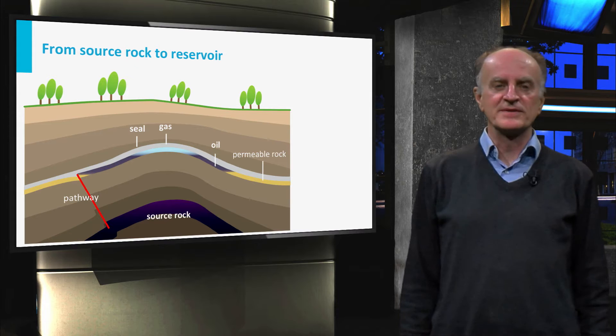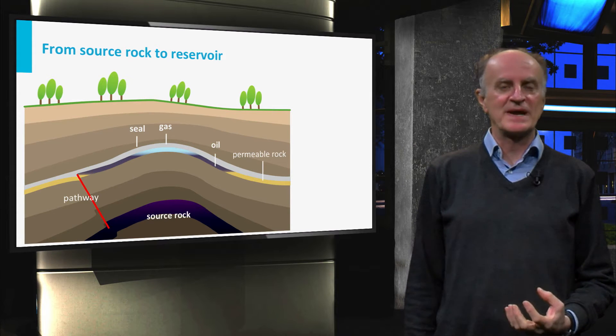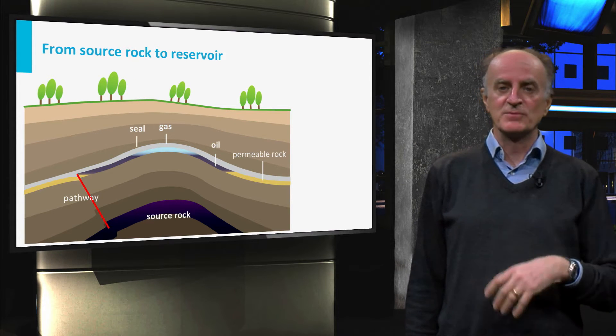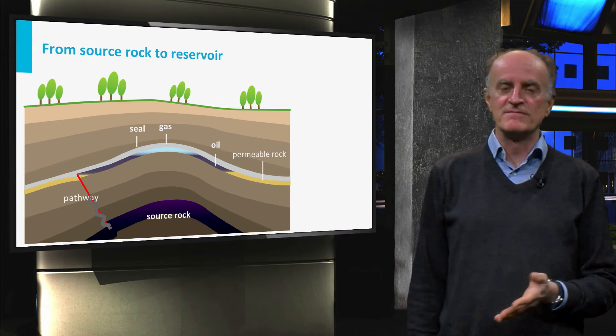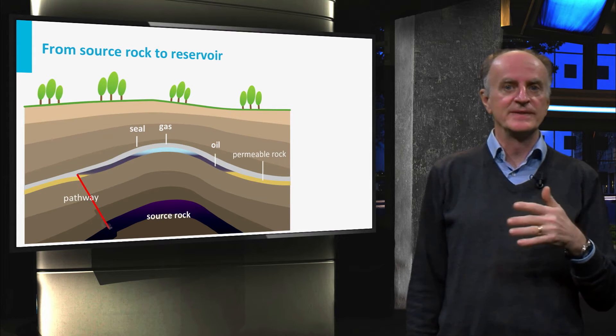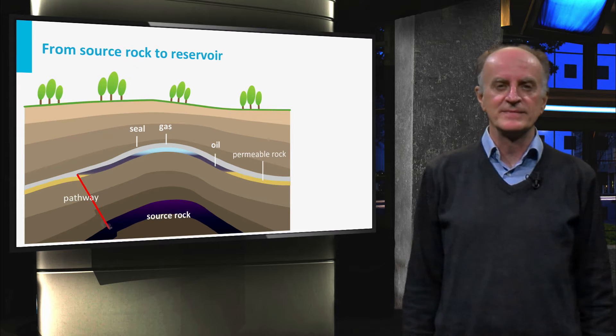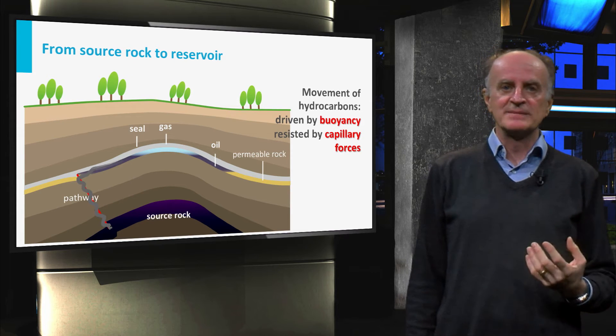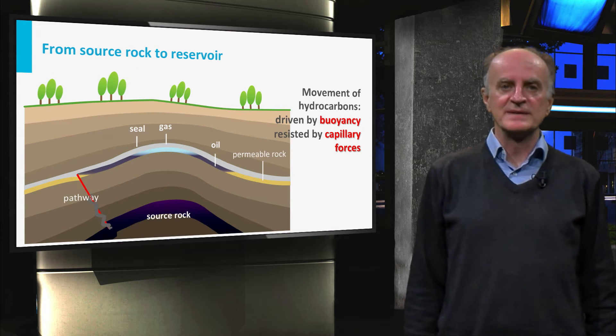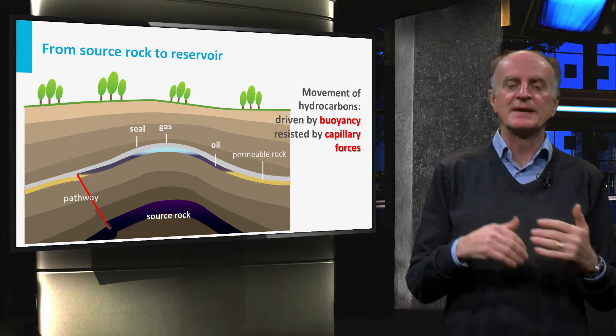In the previous module we left the large petroleum molecules trapped in the source rock. These molecules will leave the source rock and flow along permeable layers until they reach their final destination, the reservoir. We will now discuss the main processes driving these movements, namely buoyancy and capillary pressure.